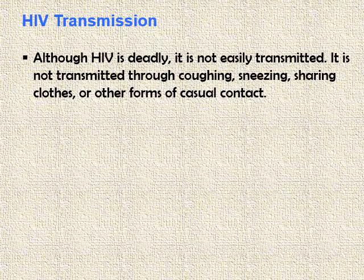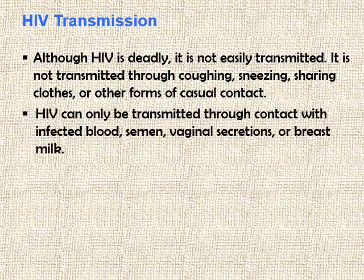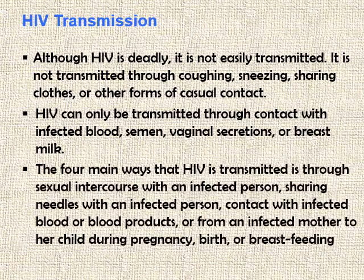HIV transmission. Although HIV is deadly, it is not easily transmitted. It is not transmitted through coughing, sneezing, sharing utensils, or other forms of casual contact. HIV can only be transmitted through contact with infected blood, semen, vaginal secretions, or breast milk. The four main ways HIV is transmitted are: sexual intercourse with an infected person, sharing needles with an infected person, contact with infected blood or blood products, or from an infected mother to her child during pregnancy, birth, or breastfeeding.